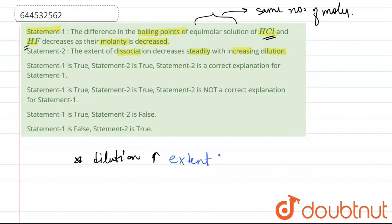The extent of dissociation increases, but both the solution start behaving like pure water. Hence, difference in boiling point of equimolar solution of HCl and HF decreases as their molarity is decreased.